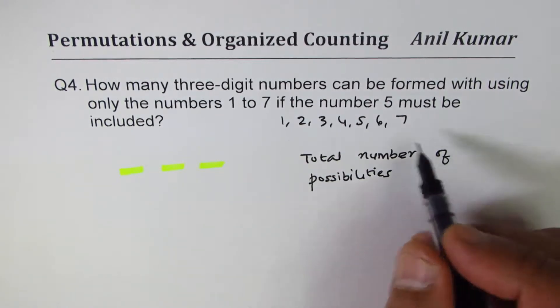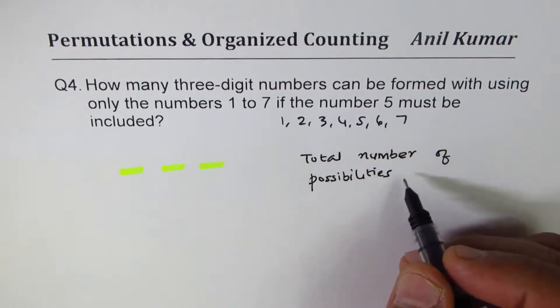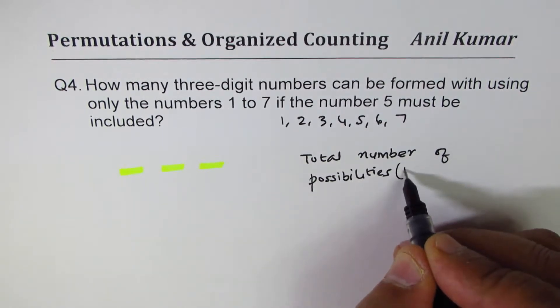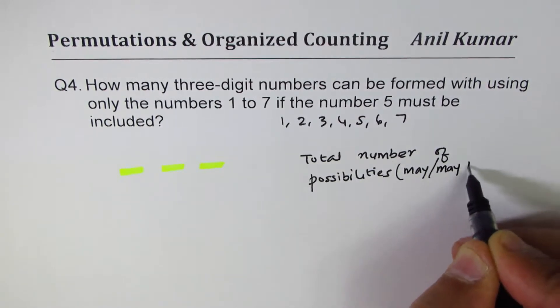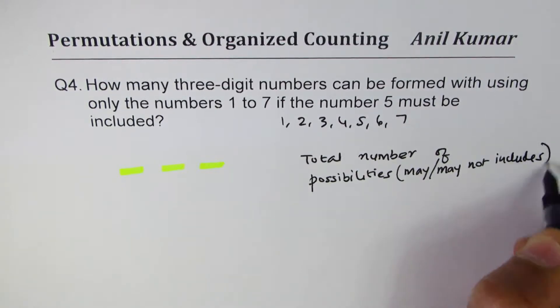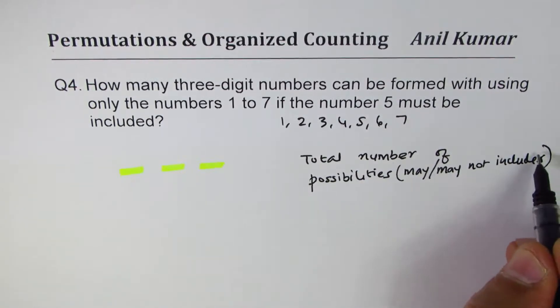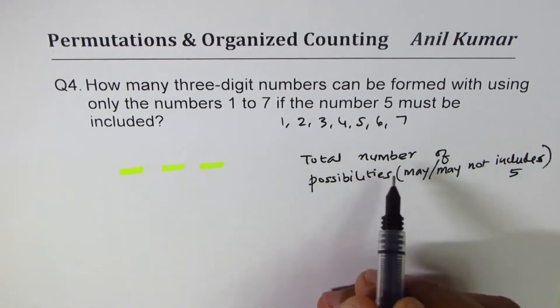That means even those which may or may not include 5. That's what I mean: total number of possibilities may or may not include 5.